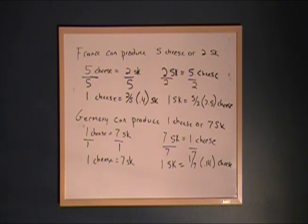Likewise, in France, if they want an extra tub of sauerkraut, they have to give up two and a half wheels of cheese. With trade, if they're able to get one tub of sauerkraut and give up less than two and a half wheels of cheese, they will be better off. They'll be able to allocate their resources more efficiently.